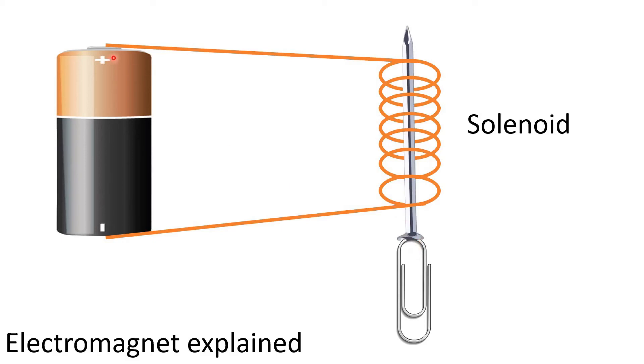Switching on, there is a current. There is a magnetic field inside the coils which are enhanced by the ferromagnet, the nail. And then the nail starts to attract metal parts.